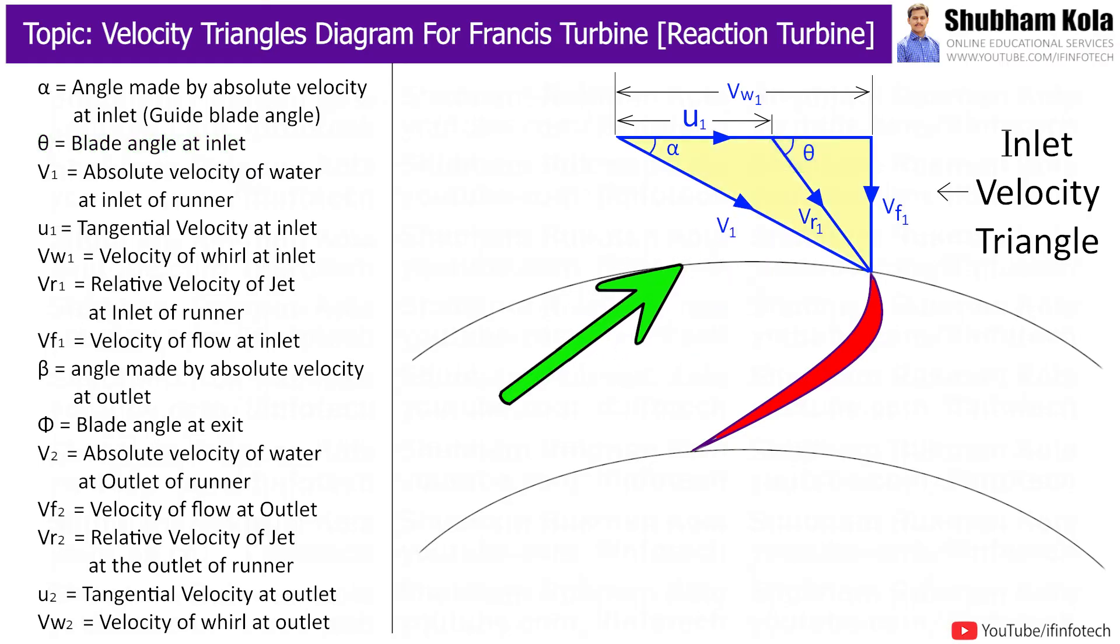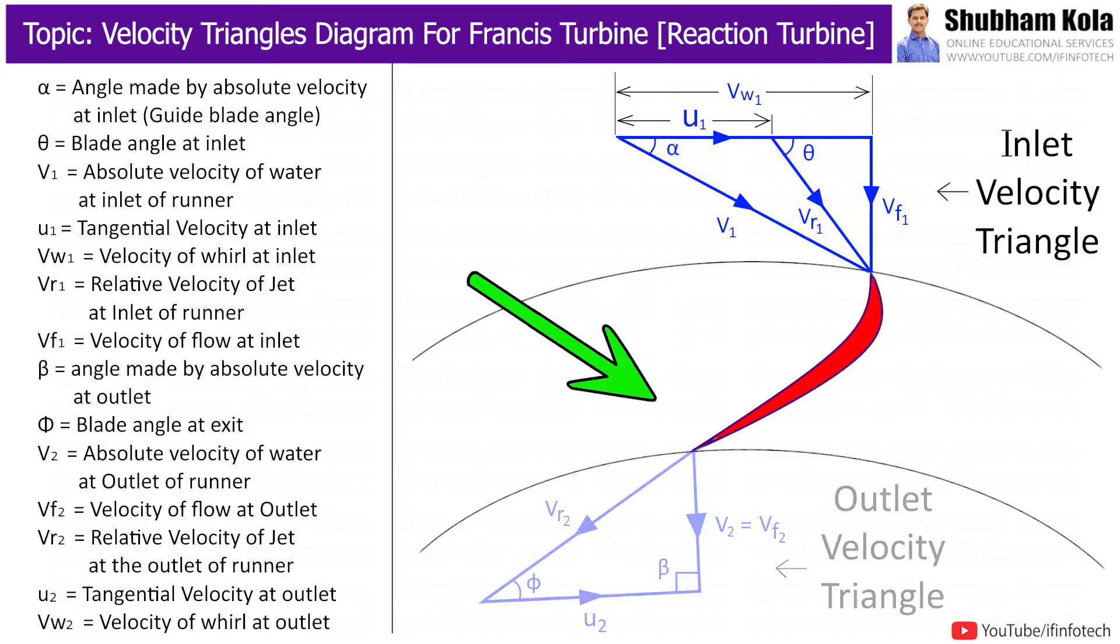So here we have completed inlet velocity triangle for Francis turbine. Now, we will draw outlet velocity triangle for Francis turbine. So in Francis turbine, discharge is radial at outlet, i.e. angle beta is 90 degrees. And when beta is 90 degrees, the velocity of water at outlet, i.e. V2 is in the vertical line.